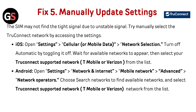Fix 5: Manually update network settings. The SIM may not find the right signal due to unstable signals. Try manually selecting the True Connect network. For iOS: open Settings, go to Cellular or Mobile Data, tap Network Selection, turn off Automatic, wait for available networks, then select your True Connect supported network like T-Mobile or Verizon. For Android: open Settings, go to Network and Internet, tap Mobile Network, go to Advanced, then Network Operator, choose Search Networks, and select the True Connect supported network like T-Mobile or Verizon.